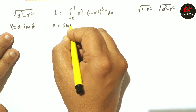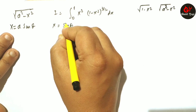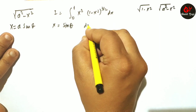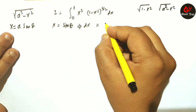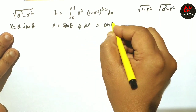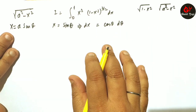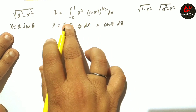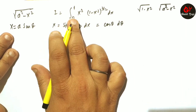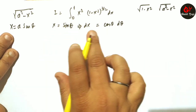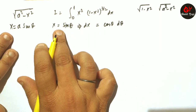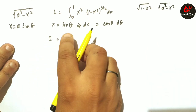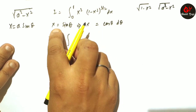When you substitute something, you need to differentiate — take the derivative. So dx = cosθ dθ. I will also change the limits. When x = 0, sinθ = 0, so θ = 0 as well — sin⁻¹(0) = 0.